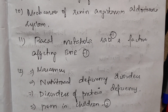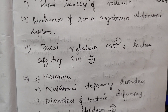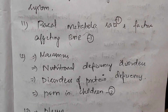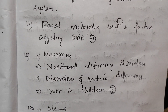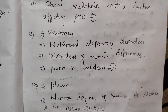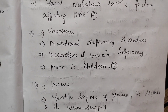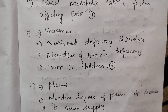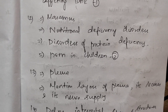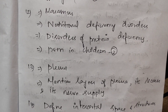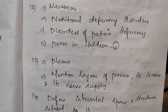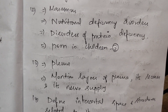BMR — basal metabolic rate: factors affecting BMR. Deficiency disorders: marasmus, nutritional disorders, disorders of protein deficiency, protein-energy malnutrition in children.